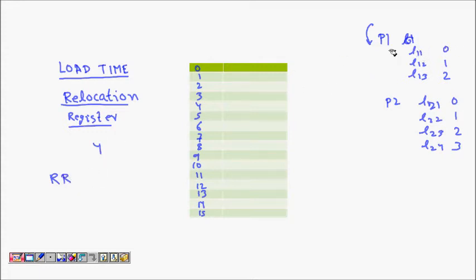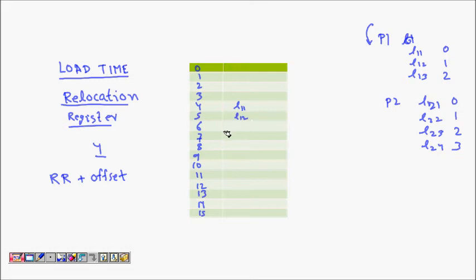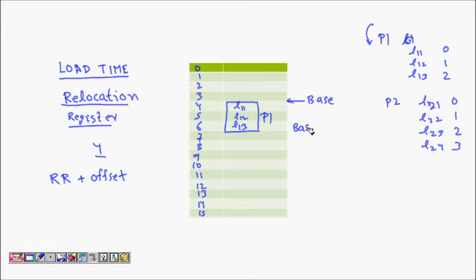With a relocation register of 4: L1_1 goes to 4+0=4, L1_2 goes to 4+1=5, and L1_3 goes to 4+2=6. The relocation register value is called the base address. Each process has a base and a limit, so it is known that all the code will be in the region from base to base plus limit. Program 1 cannot access anything outside that region.